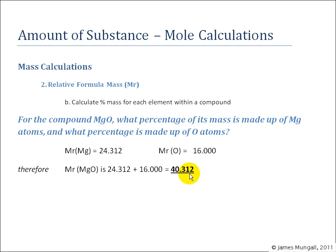So that's the MR of the compound and of that, we could say that 24.312 of the 40.312 is due to the magnesium. So that's 60.3%, and then the 16 divided by 40.312, that is the percentage 39.7 mass due to oxygen.